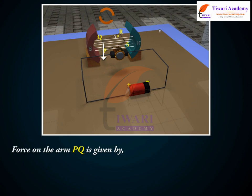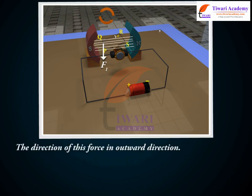Force on the arm PQ is given by F1 equals BIL. The direction of this force is in the outward direction.